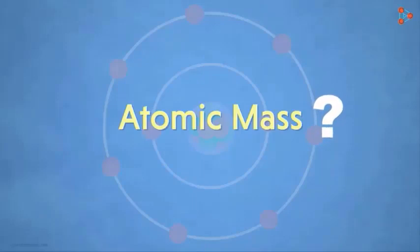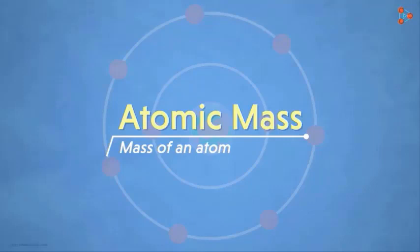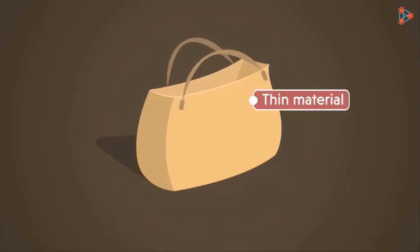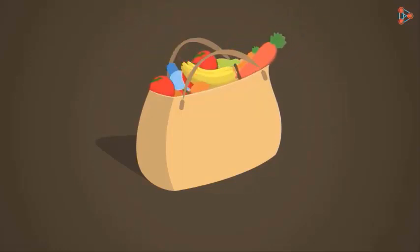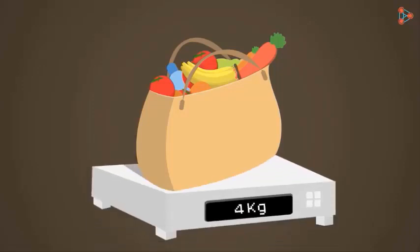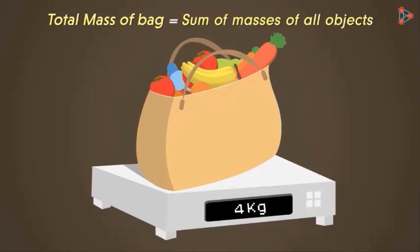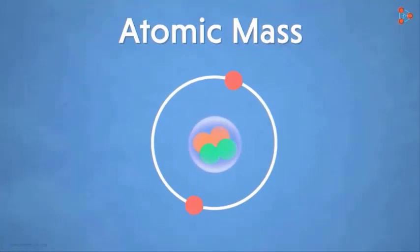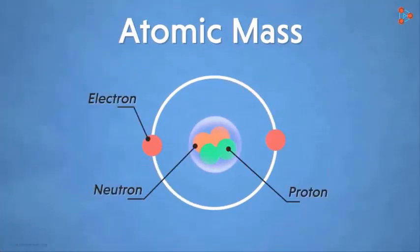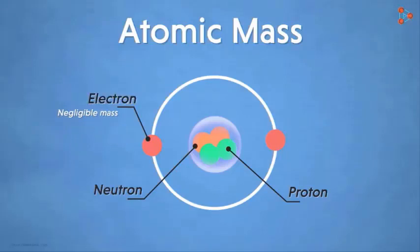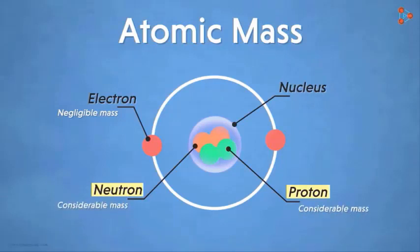After thoroughly understanding atomic charge, let's discuss atomic mass. Suppose you have a bag made of extremely thin material — so thin it almost has no mass of its own — and you fill it with objects. The total mass of the bag is the sum of the mass of all objects inside it. Similarly, the mass of an atom can be calculated from its subatomic particles. Since electrons have negligible mass, only the protons and neutrons in the nucleus contribute significantly to the atom's mass.